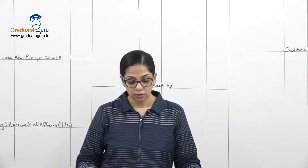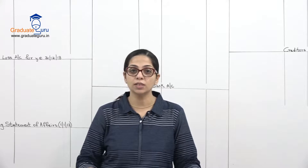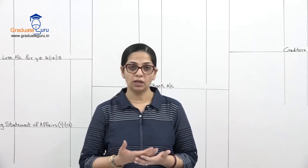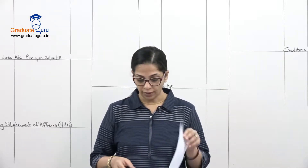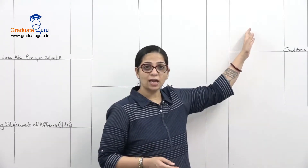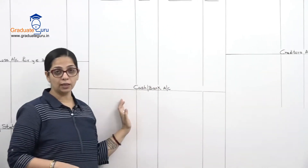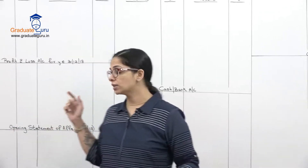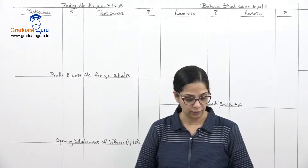Payments to creditors includes an advance of 2,500 paid for booking office premises. We accidentally put it under creditors, so we need to remove it and treat it as an advance for office premises. The two extra working accounts we need are dators and creditors. We also keep a cash bank account ready, since they've given us just a summary of transactions.